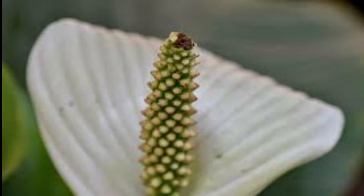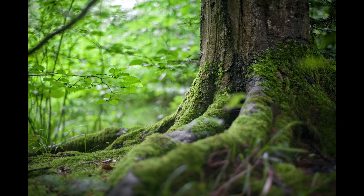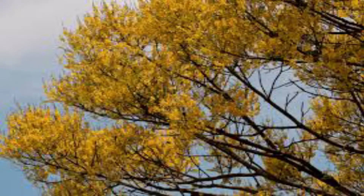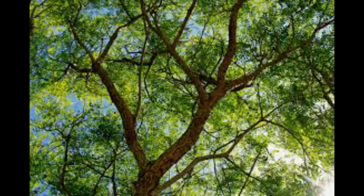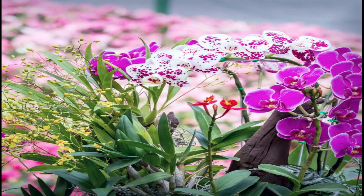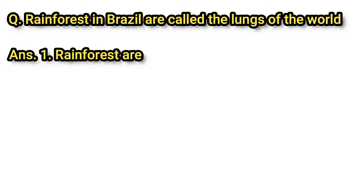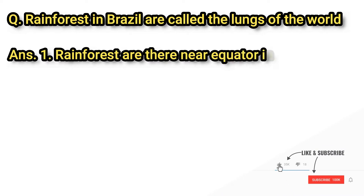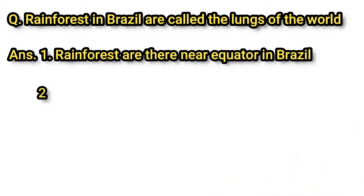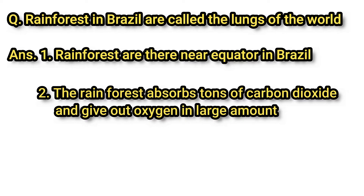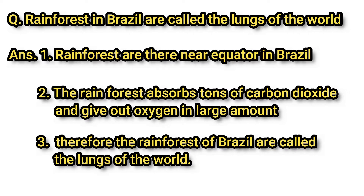Brazil has the largest number of vegetation species in the world, including evergreen, semi-evergreen, and arid types of vegetation. Trees like Pau Brazil, rubber, mahogany, rosewood, and a variety of orchids are found here. The equator passes through the northern part of Brazil, bringing heavy rainfall. This region hosts one of the densest forests in the world. The rainforest naturally absorbs tons of carbon dioxide and releases large amounts of oxygen.